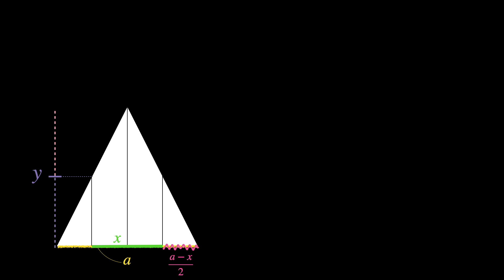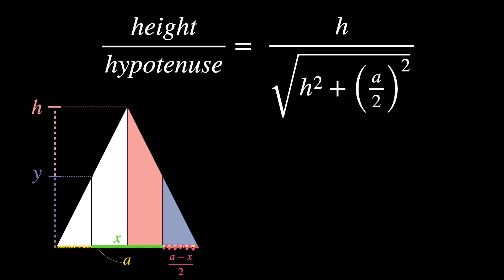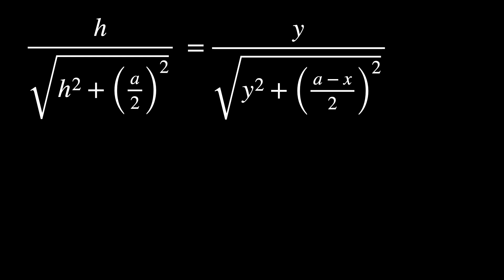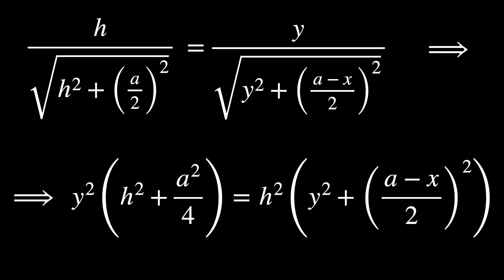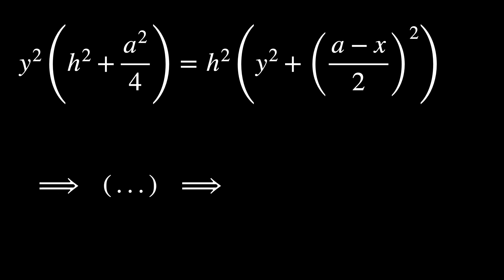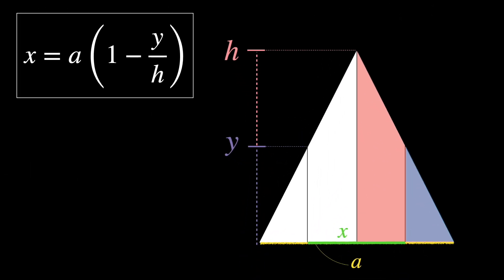If we have a height y between 0 and h, then we notice two similar triangles inside the pyramid. Making this ratio height over hypotenuse, we get for the first one h over the square root of h squared plus A over 2 squared, which is the same as the second one, which is y over the square root of y squared plus A minus x over 2 squared. And this implies, working on the math here, that x equals A times 1 minus y over h. So we found x is a function of the height y.